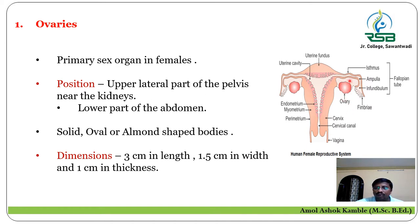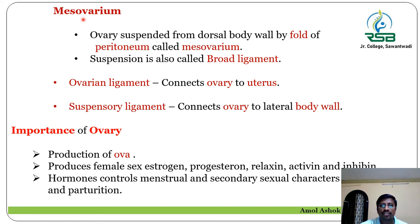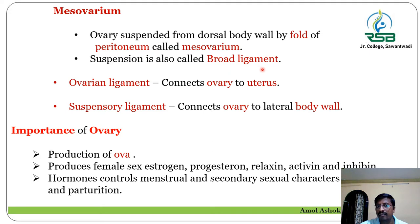The ovary is connected with the mesovarium. The mesovarium is the fold of peritoneum from which the ovary is suspended from the dorsal body wall. It is also called the broad ligament. This broad ligament has two types of ligaments: the ovarian ligament and the suspensory ligament, which connect the ovary with the remaining parts of the internal genitalia.